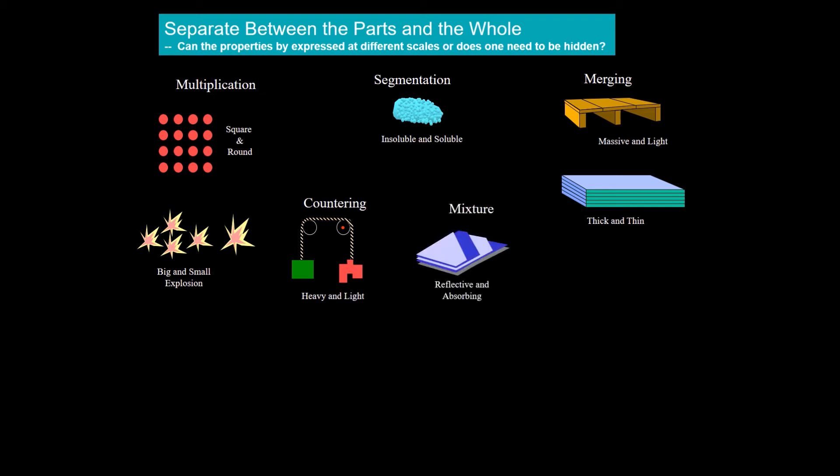For mixtures, reflecting materials can appear absorbing when sandwiched between absorbing pieces of material. Rough pieces can be hidden by combining rough pieces in such a way that the rough pieces face each other.